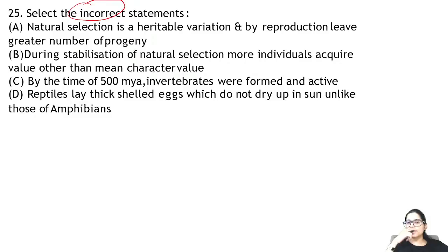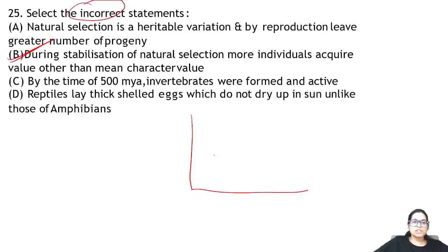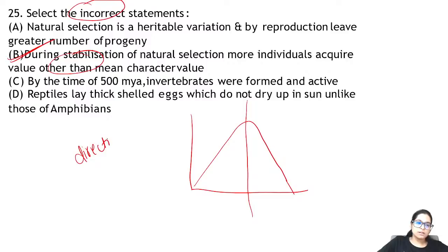Zoology Question 25: what is incorrect? In stabilising selection, the mean character value is most occupied — it is not other than the mean. When it is other than the mean we call it directional selection. So option B is incorrect.